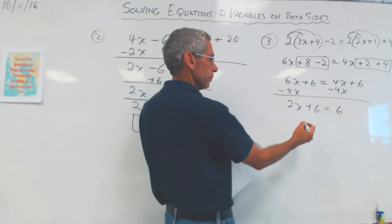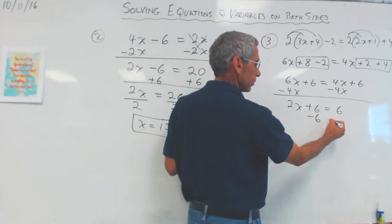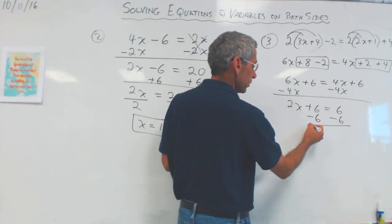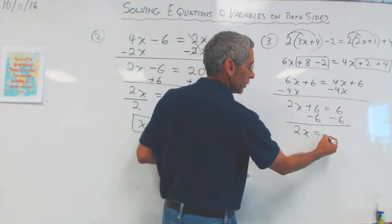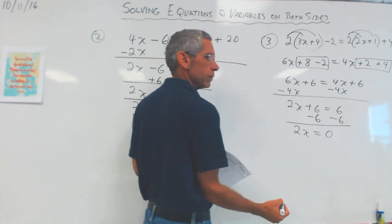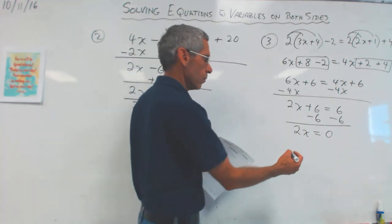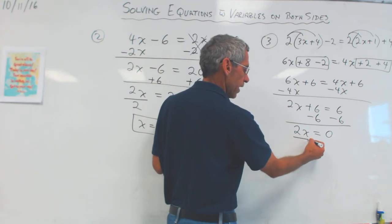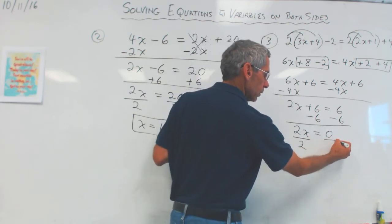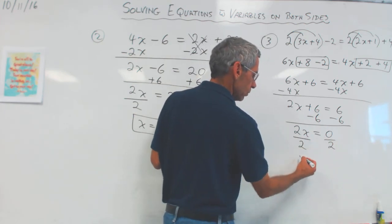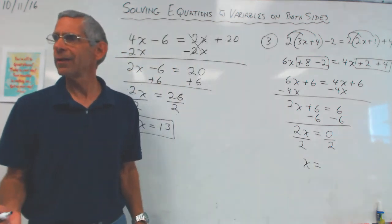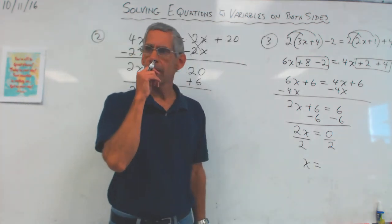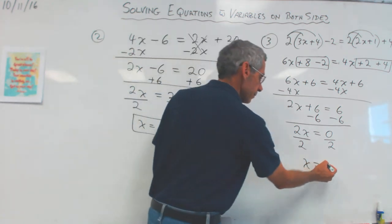Now what do I do? Subtract the 6, because I want my x's all by themselves. That gives me a 2x is equal to 0. That's interesting. Oh my gosh. Now I'm going to divide both sides by 2. Divide both sides by 2. 1x or x is equal to, how many times does 2 go into 0? 0. 0 times. X equals 0.